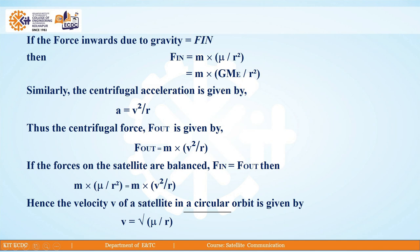Since μ = G × M_e, we can rewrite F_in as: F_in = m_satellite × G·M_e / r². Similarly, there is centrifugal acceleration given by a = V²/r. Thus, the centrifugal force F_out = m × V²/r. If the forces on the satellite are balanced, then F_in = F_out, so: m × μ/r² = m × V²/r.